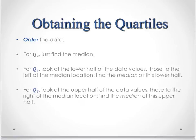Now to get the first quartile, quartile 1, you're going to look at the lower half of the data values, those to the left of the median. So don't include the median. Everything to its left. And find the median of that half of the data. That's quartile 1.